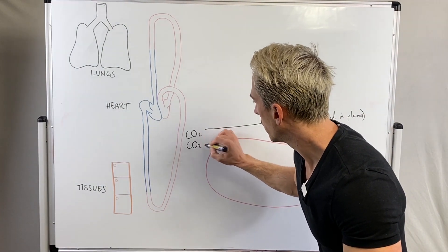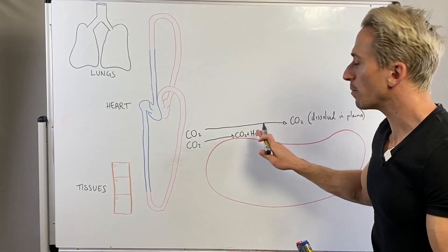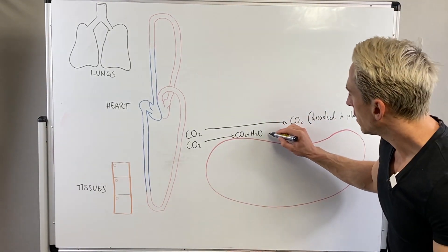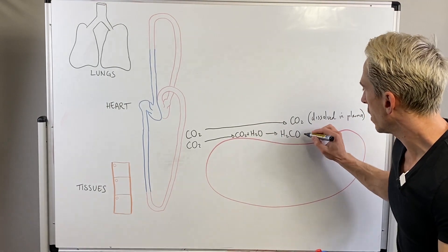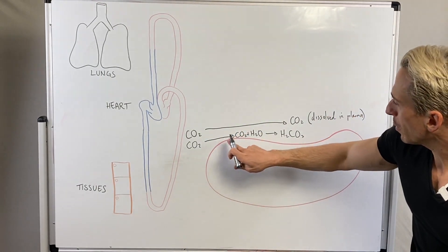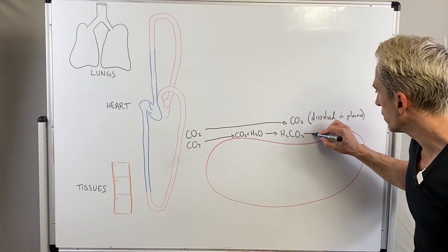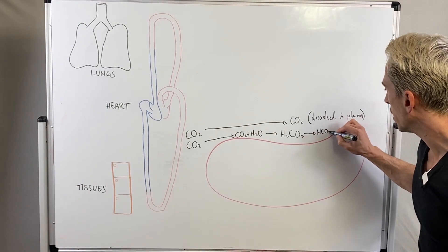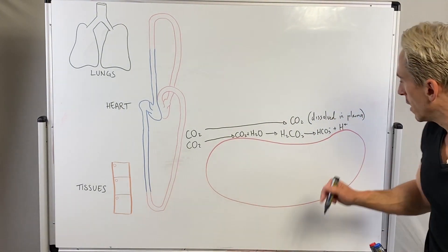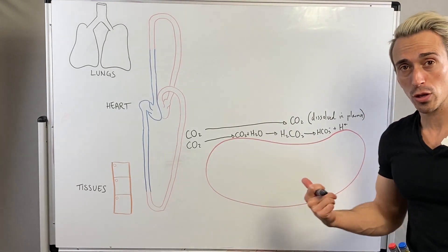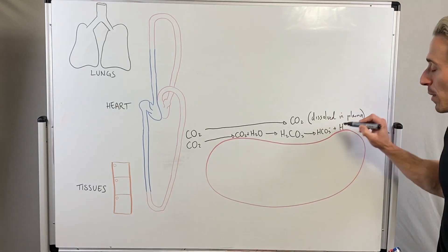The second thing is that carbon dioxide can go into the plasma and bind with water in the plasma. When carbon dioxide binds with water, what we get is H2CO3 — that's called carbonic acid. Carbonic acid then splits itself apart, forming bicarbonate and hydrogen ions. The hydrogen ions will bind to plasma proteins to buffer them out, because too many free-floating hydrogen ions would make the blood too acidic, which is not good for our body.